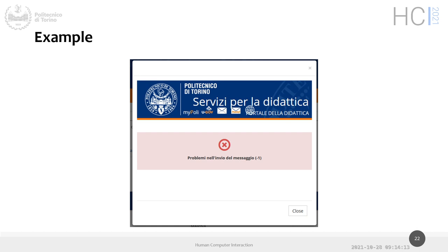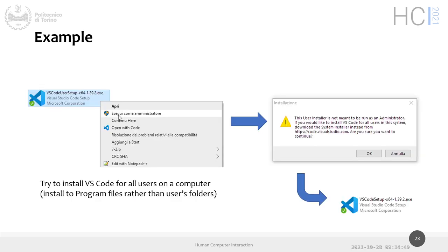An example of feedback that is very strong visually but doesn't tell me very much: error messages saying 'there were problems in sending the message.' What should I do? Were there problems but it was delivered anyway? Or was it not sent? Should I resend it? This is the kind of unhelpful feedback we hope to never see.